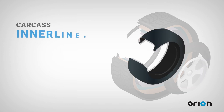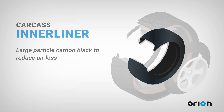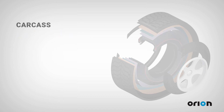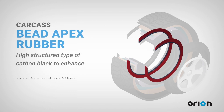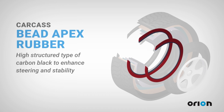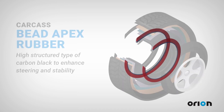The inner liner, found inside tubeless tires, has large particle carbon black, which is designed to reduce air loss by minimizing air movement through the tire. Finally, there's the bead apex rubber with a high structure type of carbon black, which enhances steering capabilities and directional stability.